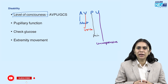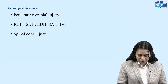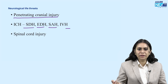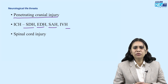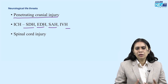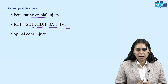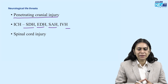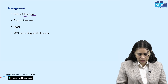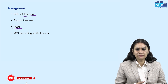By disability, we try to diagnose neurological life threats. These can include penetrating cranial injury, intracranial hemorrhage (SDH, EDH, subarachnoid hemorrhage, or IVH), or spinal cord injury. Once the patient is stabilized, we can proceed with investigations. If GCS is less than 9, we intubate, provide supportive care, and get an NCCT done to manage according to the life threat.